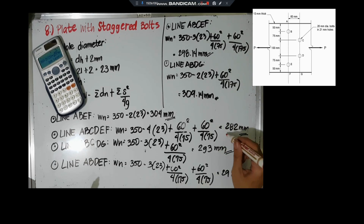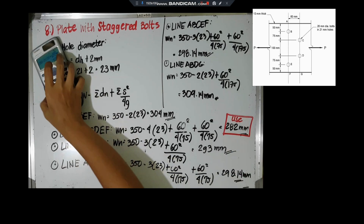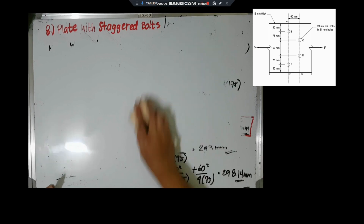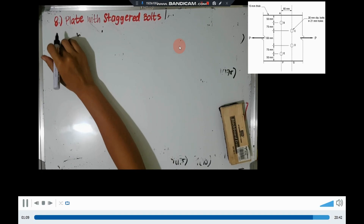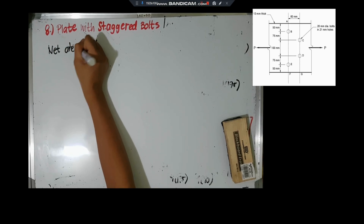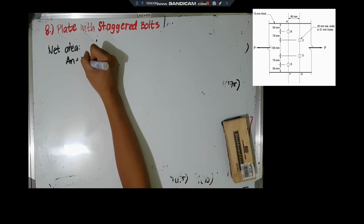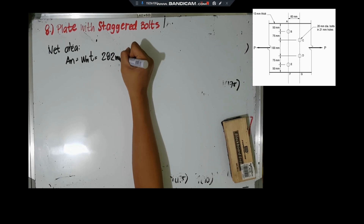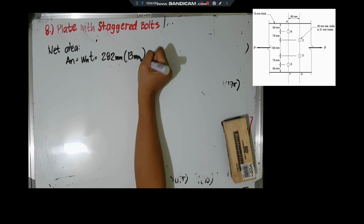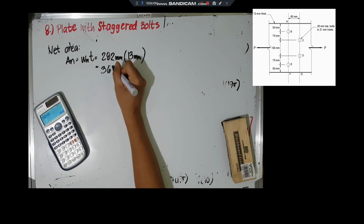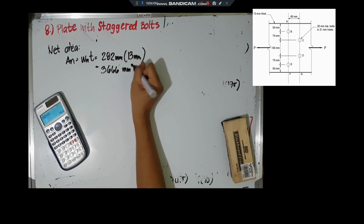According to NSCP 2015, we consider the least net width. Our least net width is 282mm. The net area is the product of the net width and the thickness of the plate: 282 × 13 = 3,666 mm².